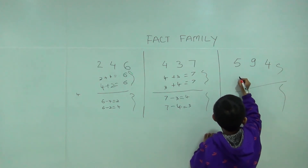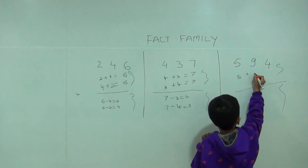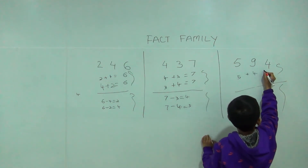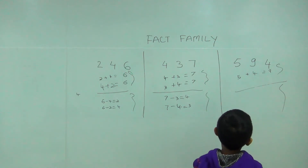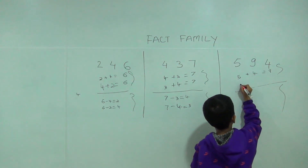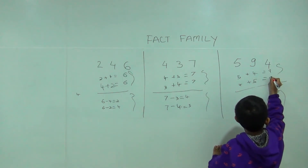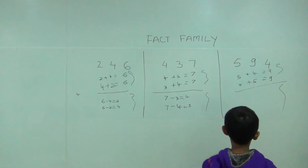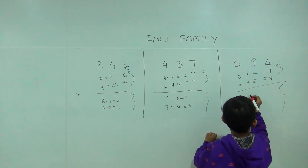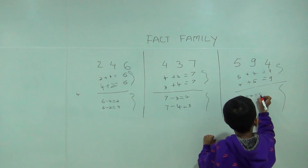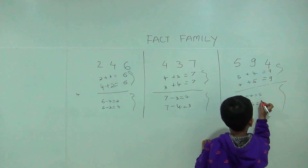5 plus 4 is equal 9, and 4 plus 5 is equal 9. Now we will do subtraction: 9 minus 4 is equal 5, and 9 minus 5 is equal 4.